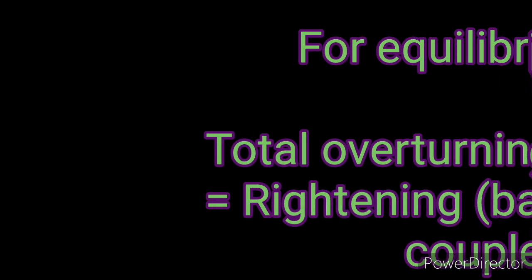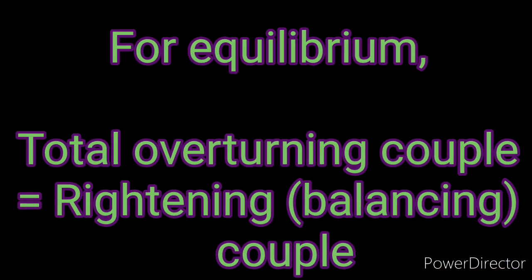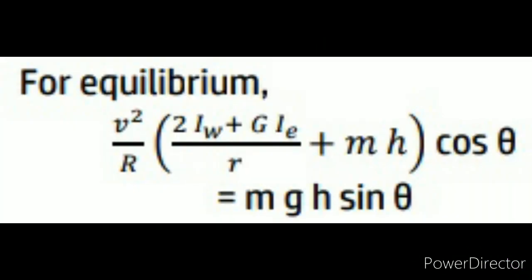Therefore, the total balancing couple due to the weight of the vehicle is equal to M·g·H·sin theta. For equilibrium, the total overturning couple should be equal to the righting or balancing couple due to the weight of the vehicle. Therefore, V²/R into (2Iw + G·Ie)/r plus M·H, into cos theta, equals M·g·H·sin theta. From this relation, the angle of heel theta can be determined to avoid skidding of the vehicle.